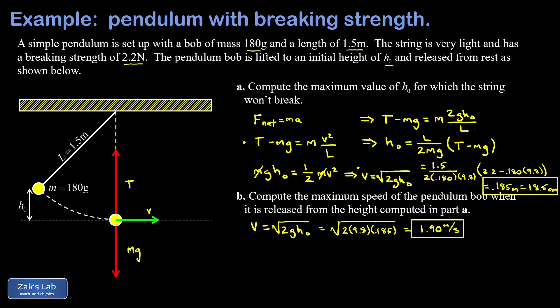Now I want to do one last thing in this problem. I want to go ahead and check the answer. So I want to see that an initial height of 0.185 meters actually gives me a tension of 2.2 newtons in the string. So I'm going to go back to the force analysis. That's t minus mg equals mv squared over l. And we'll solve that for t.